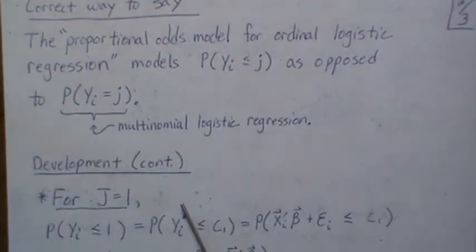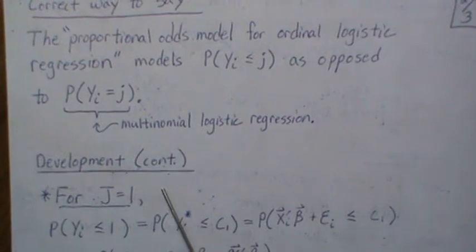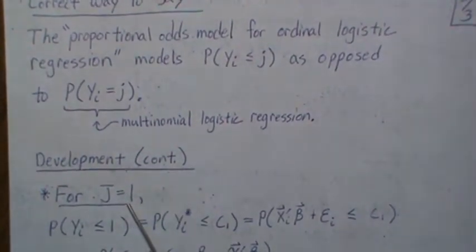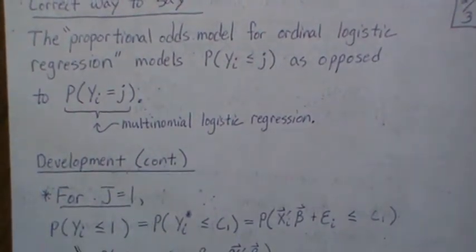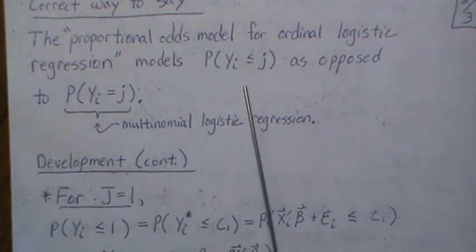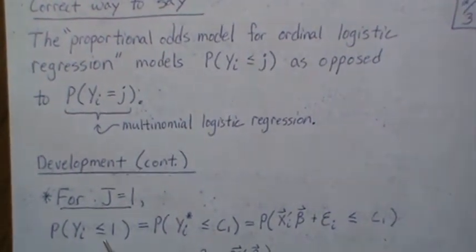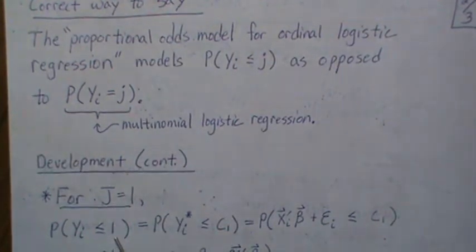So we're going to develop the, continue the development. And let's look at category one. So J equals one. So that means that we want to model the probability that y is less than or equal to one. And since it's actually only one category, we could technically put equal signs there. But for general purpose, we'll leave it like this. But this is equivalent to our continuous variable being less than or equal to that cutoff. These are the same probabilities. Then we're modeling that continuous with this linear model.